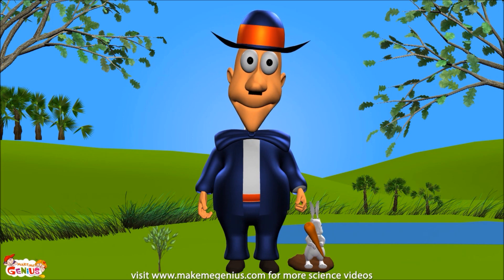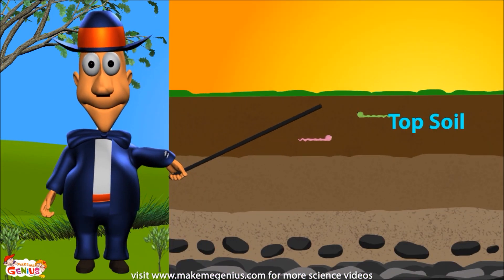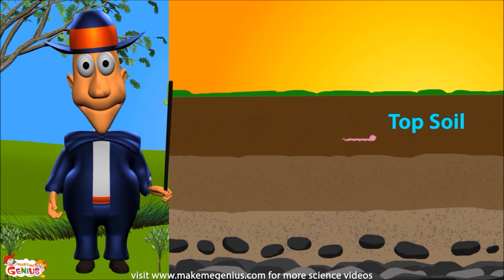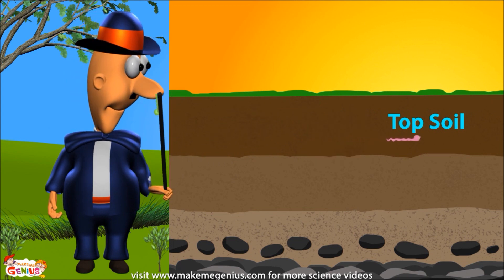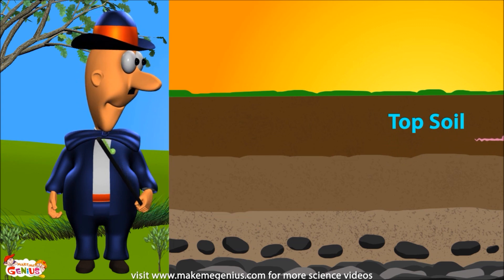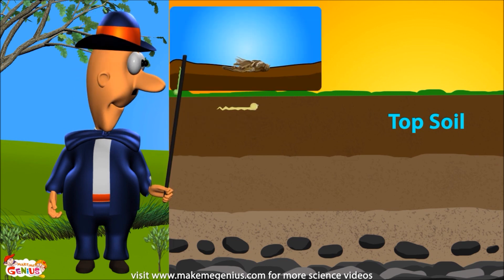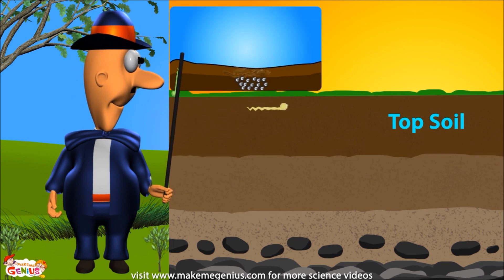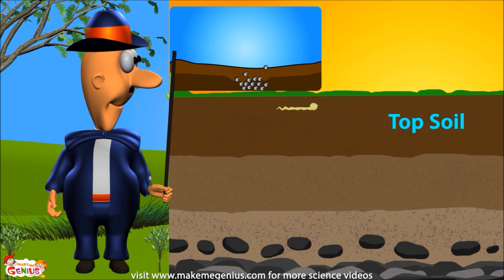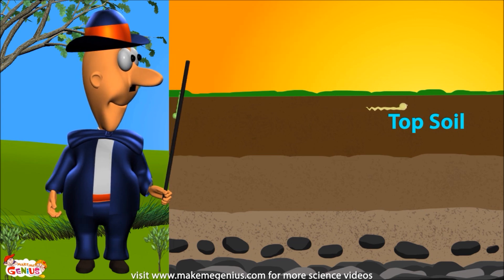Now let's look at different parts of the soil. The part where my stick is pointing is called the topsoil — plants and trees grow here. It is very rich in nutrients, which are good for plant growth. It also contains lots of worms, which are helpful for plants. The upper part is called the humus, which has a lot of dead leaves and dead animals. These dead leaves and animals are slowly decaying with the help of soil bacteria.